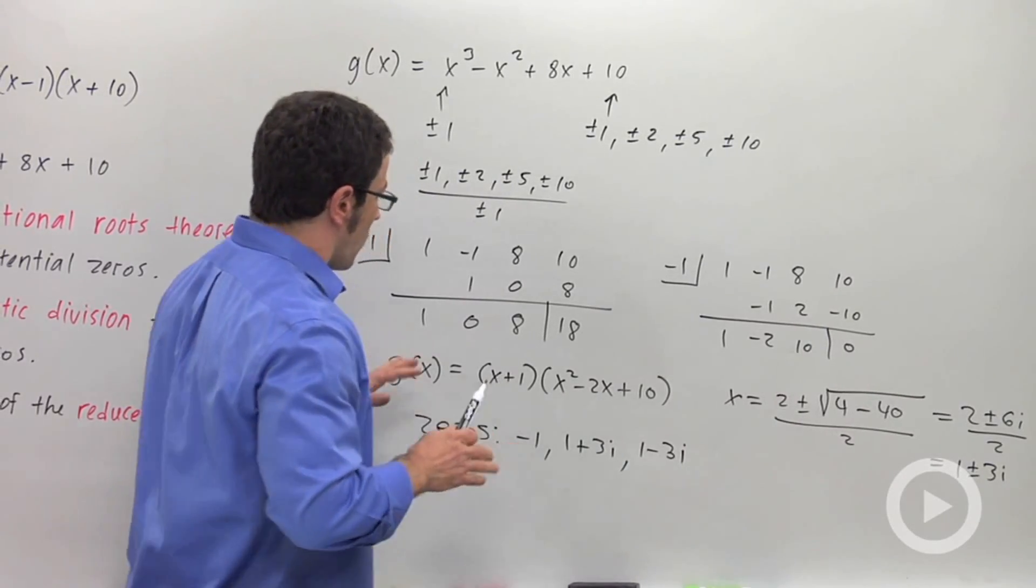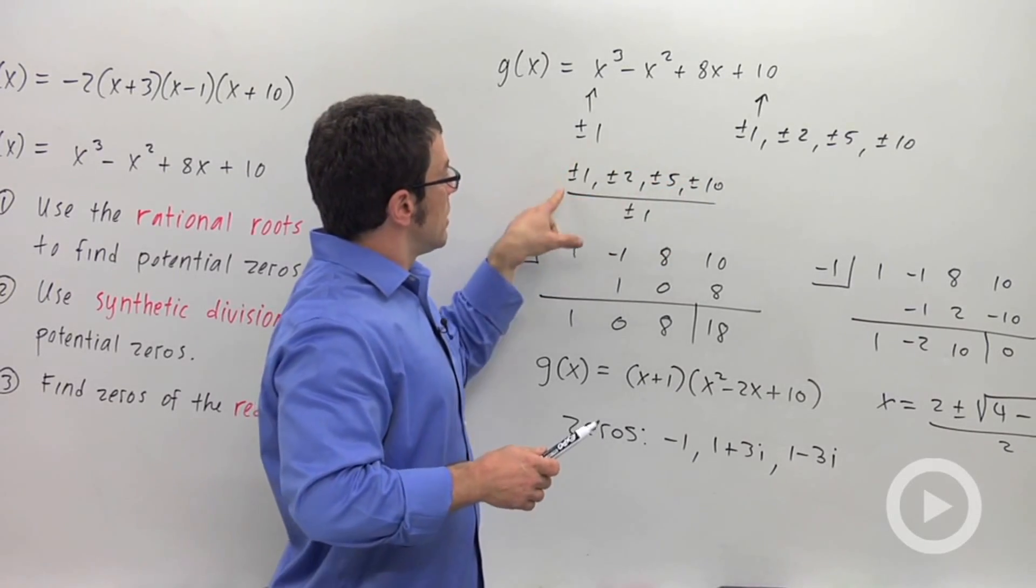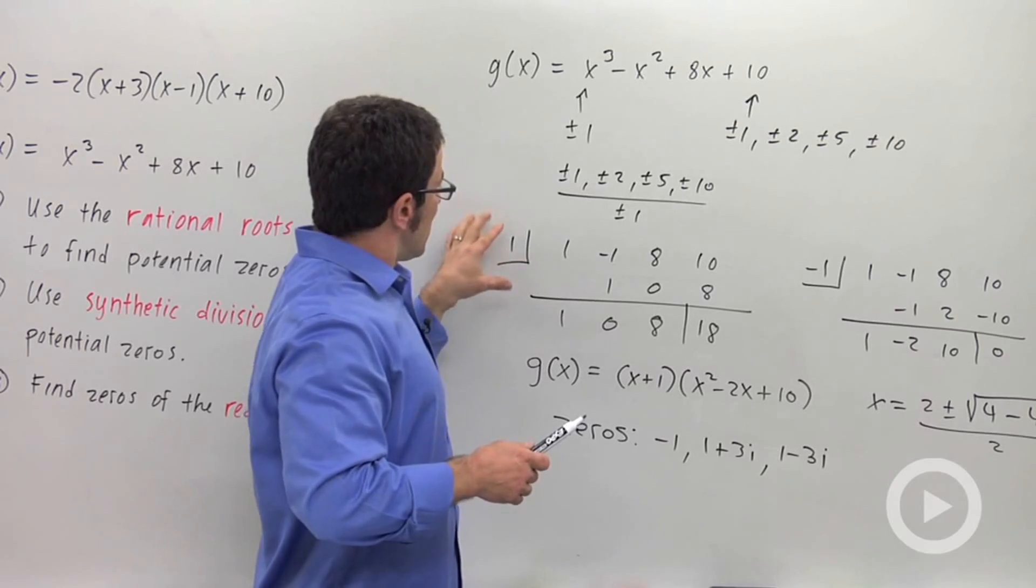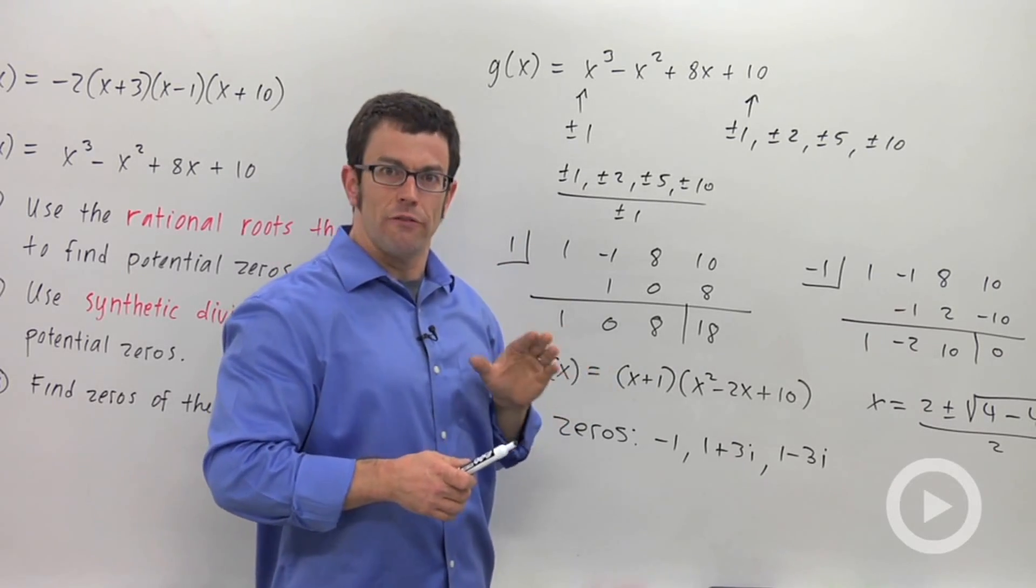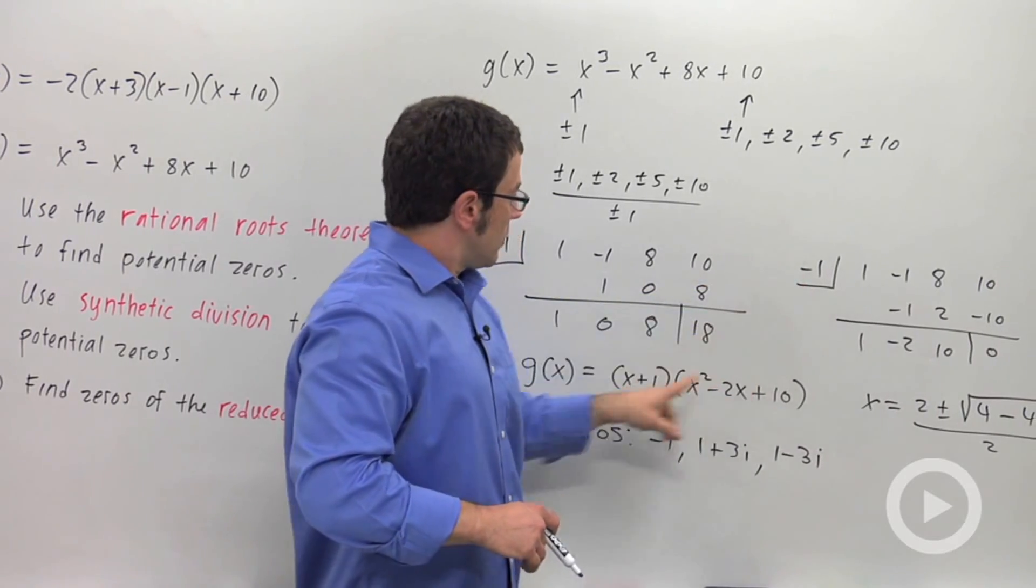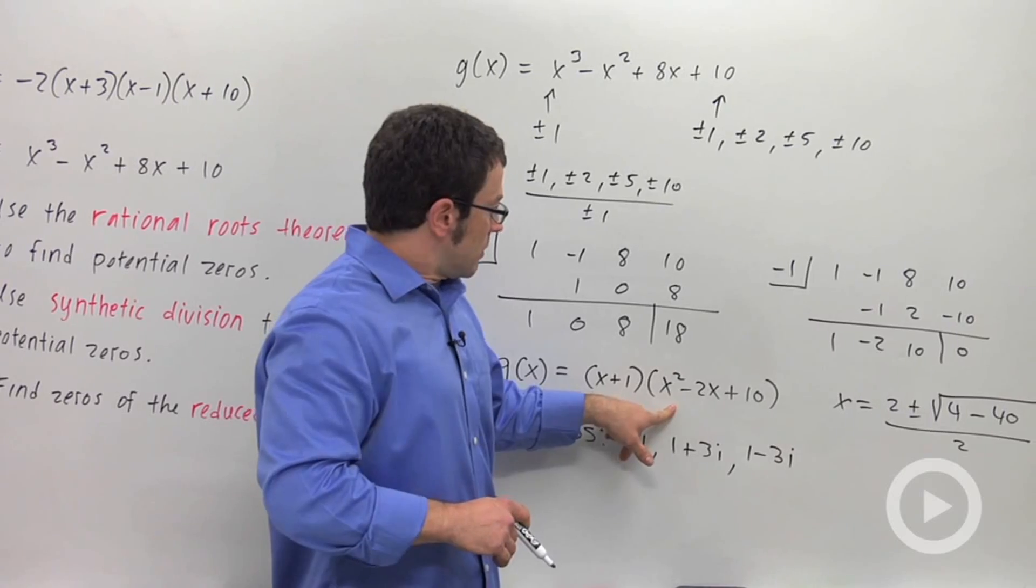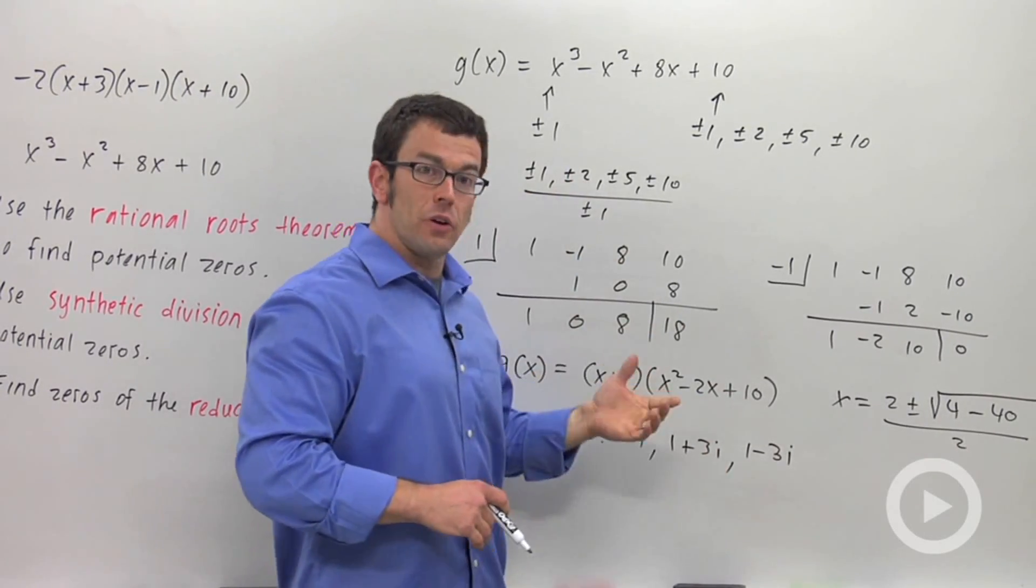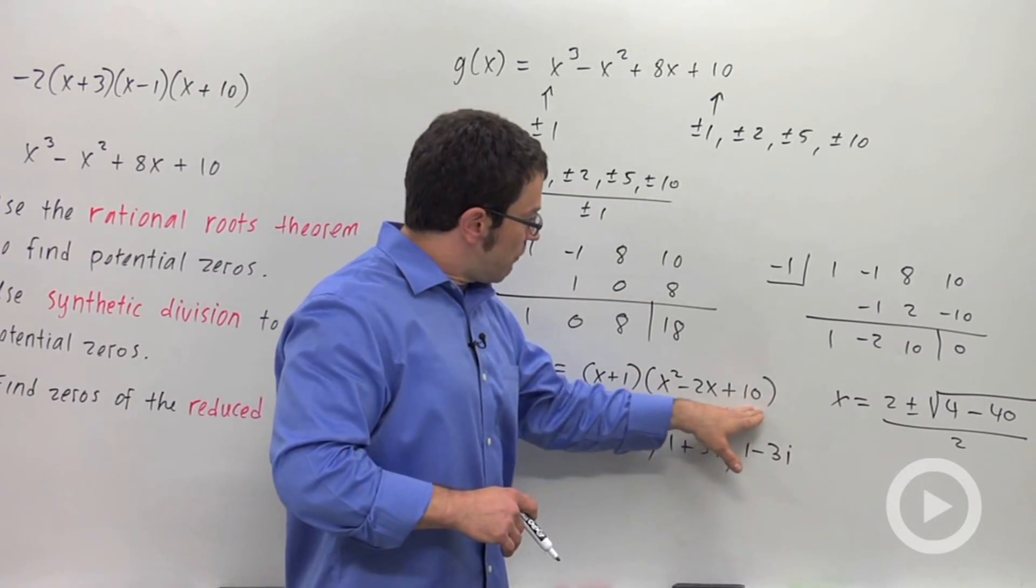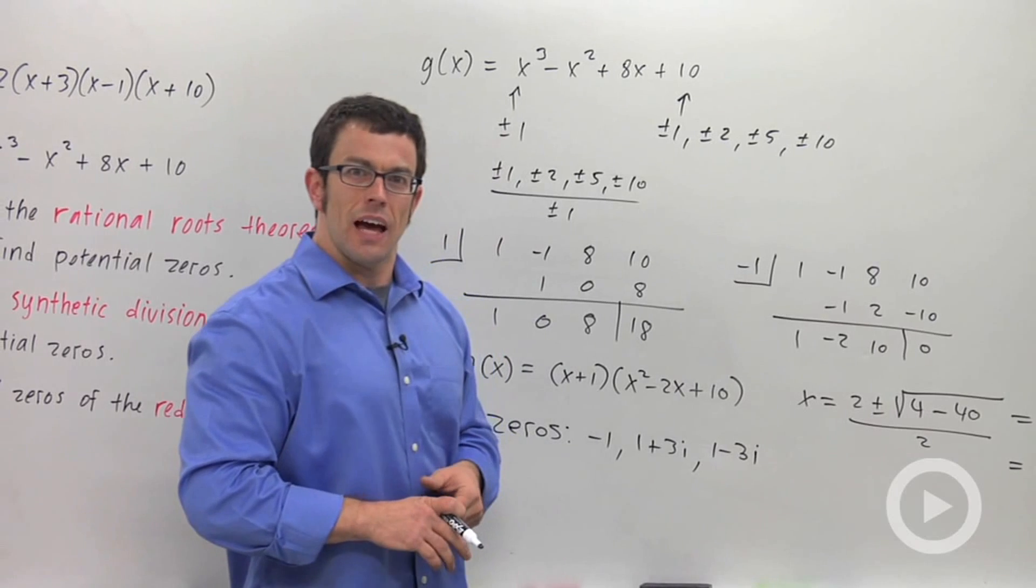Now, remember what we did. First, we used the rational roots theorem to find potential zeros. We had all these potential zeros. We were lucky to find one of them so quickly. But I would always check 1 and negative 1 first. The arithmetic is going to be the easiest. Then once you find a zero, you can take the reduced polynomial and look for the zeros of that. Now, the reduced polynomial, if you start with a fourth degree, the reduced polynomial will be a cubic, and you have to do more of this synthetic division. But when you finally do get a quadratic, use the quadratic formula and find the remaining zeros that way.